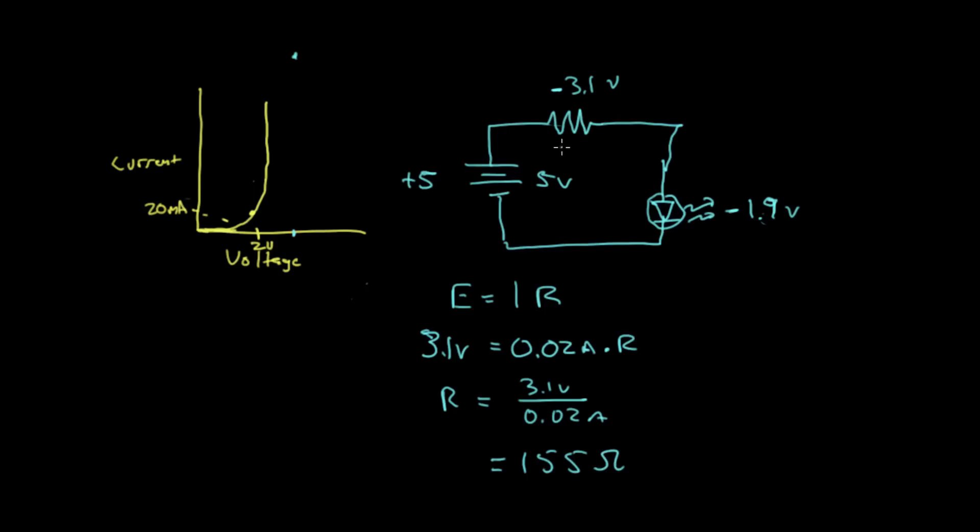So if we just use a little bit of algebra, we find that R equals 3.1 volts divided by 0.02 amps. And if I just plug that into my calculator, 3.1 divided by 0.02 is going to be 155 ohms. So if this is a 155 ohm resistor, then it should drop 3.1 volts. And the source is giving us 5 volts, so the LED should end up with 1.9 volts. And it should be happy. And it should draw 20 milliamps, which means that this calculation here will indeed give us the appropriate voltage drop.